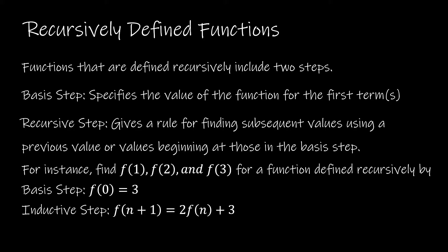The basis step for a function specifically specifies the value of the function for the first term, or sometimes terms. How many terms? It depends on how many are necessary for the recursive step. The recursive step gives a rule for finding subsequent values using a previous value or values. If you have a function that uses just one previous value, then your basis step will have just one value — it's a starting off point. If your function uses two values, then you would have two values in your basis step.